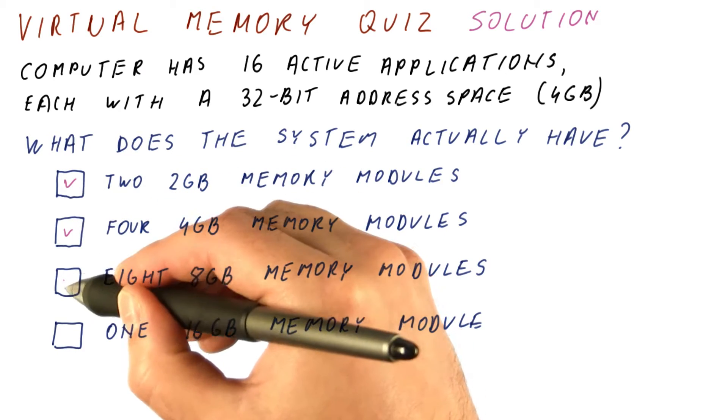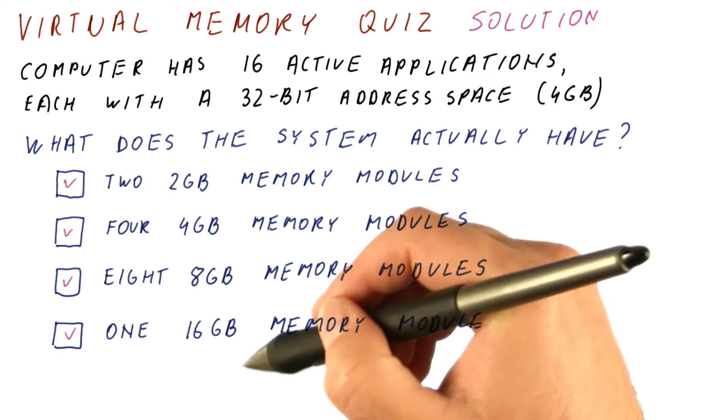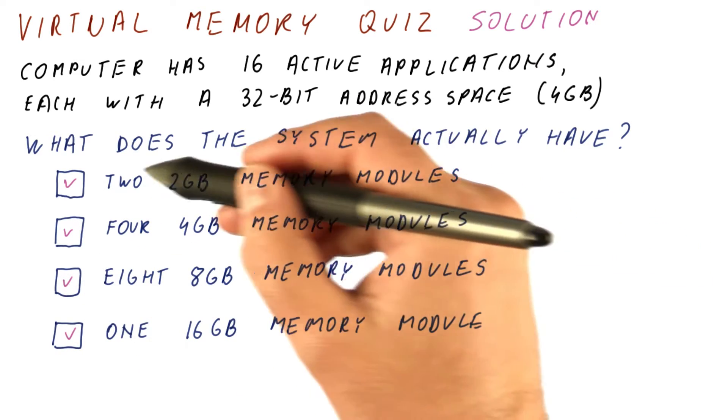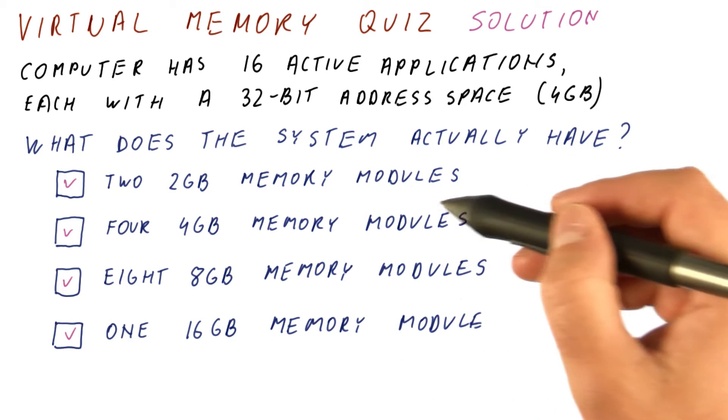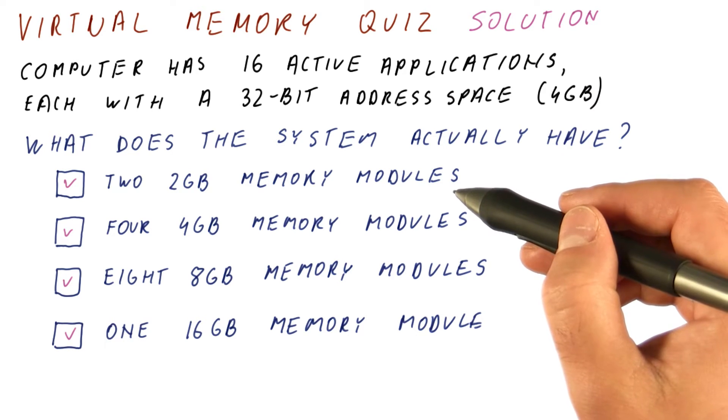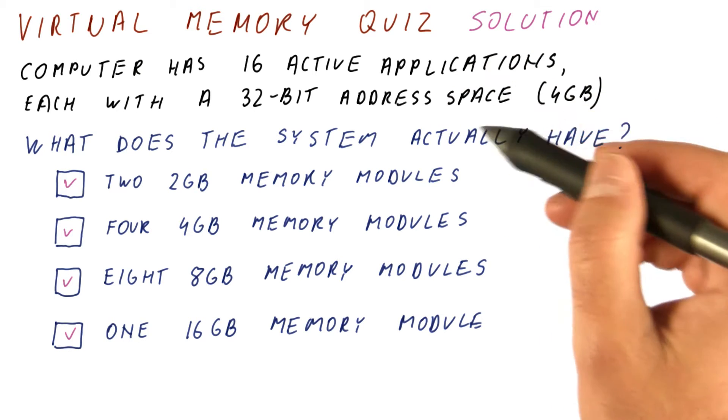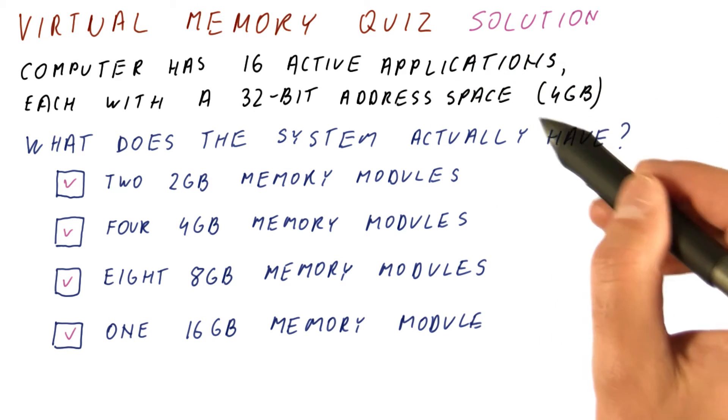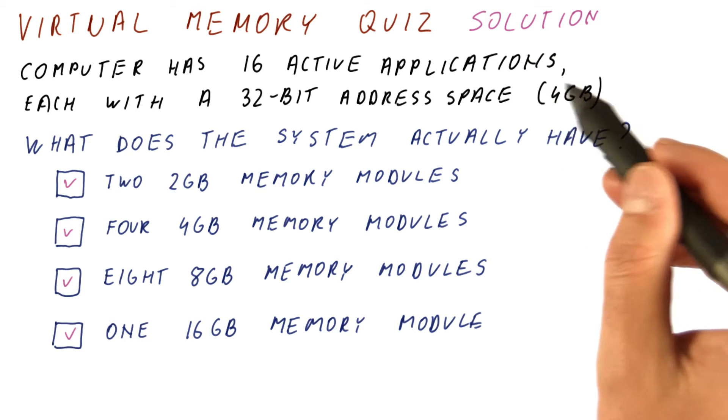It turns out that all of these are potentially correct. We can have a system that has only two 2 gigabyte memory modules, so it really has a total of 4 gigabyte physical memory. Yet it can run 16 applications, each of which thinks that it has 4 gigabytes of memory.